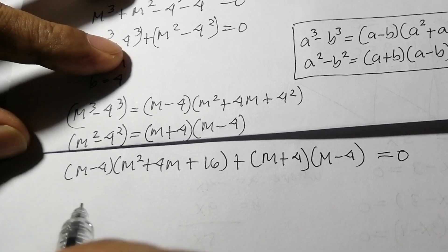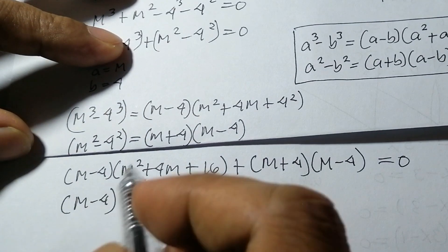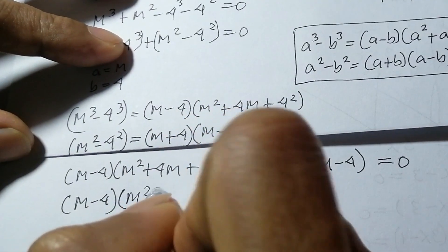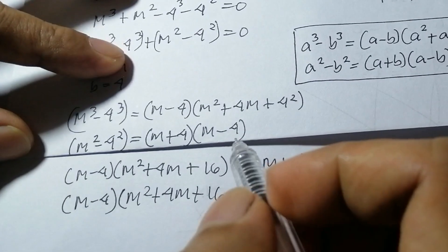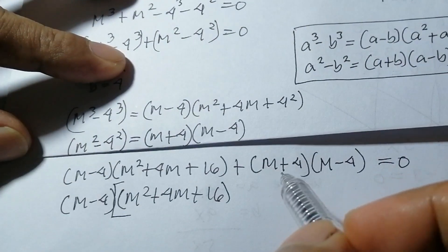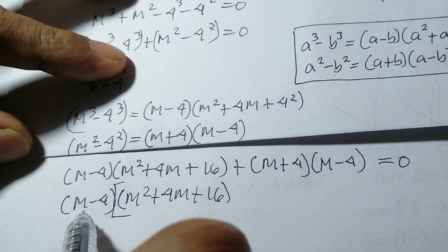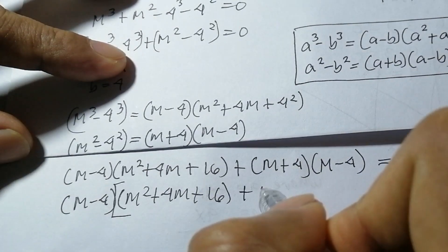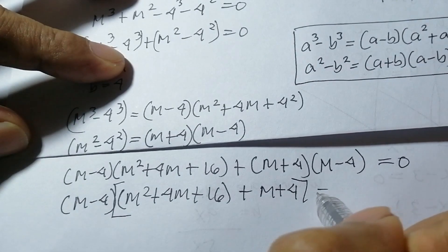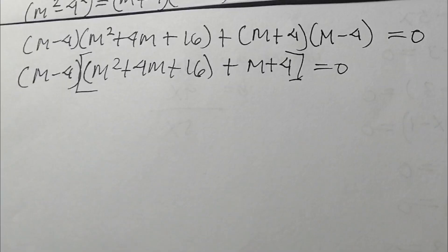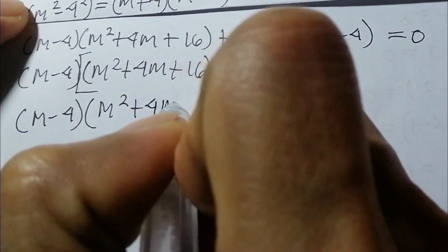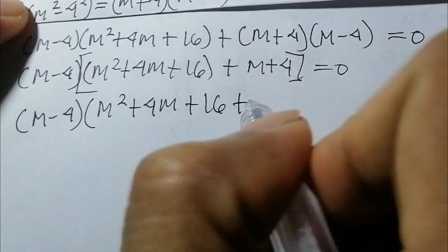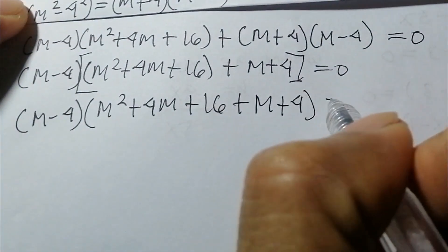We factor out (m minus 4). Dividing through, the first part gives m² plus 4m plus 16, and the second part gives m plus 4. So we have (m minus 4)(m² plus 4m plus 16 plus m plus 4) equals zero.